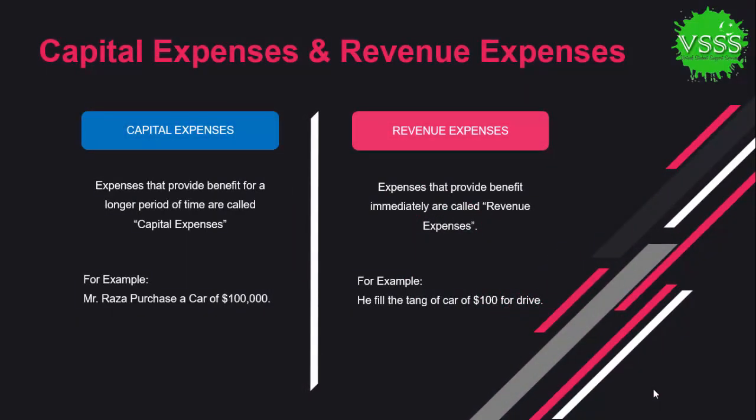In the next point we discuss the difference between capital expenses and revenue expenses. Capital expenses are those expenses that provide benefits for a longer period of time. For example, Mr. Raza purchases a car for one hundred thousand dollars. This is considered a capital expense because the benefit Mr. Raza derives from the car extends over a longer period of time, so this transaction is classified as capital expenditure.